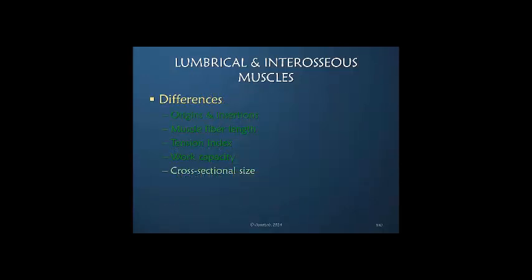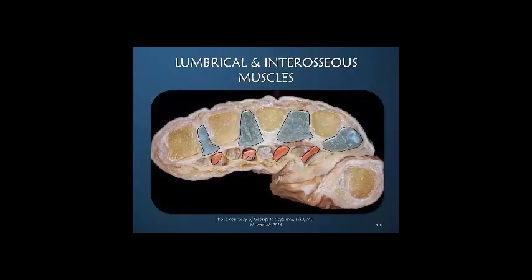What about the sizes of these two different muscle groups? Look at the enormous difference in this cross section. The blue highlights the interosseous muscles, and pink or orange highlights the lumbrical muscles — much, much smaller. Very thin, long muscles. We could call the interosseous muscles short and fat.